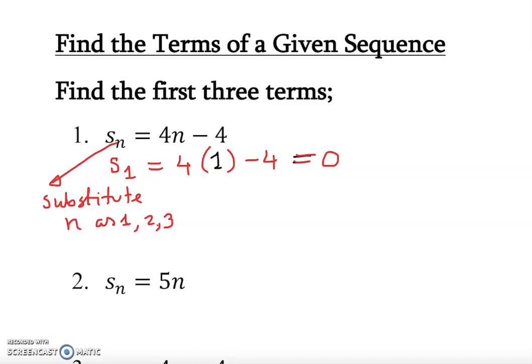So once I substitute again with S equal to 2, sorry n equal to 2, my apology, S 2, we are looking for sequence 2. So 4 times 2 minus 4. So this is going to be 8 minus 4 is 4. Remember, I just changed this one here, this guy, the n. I just changed the n only.